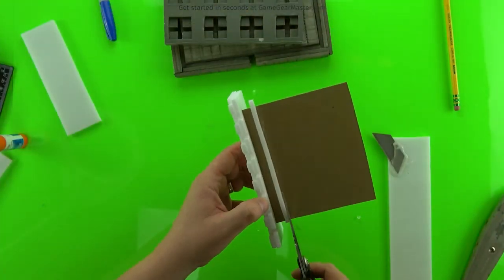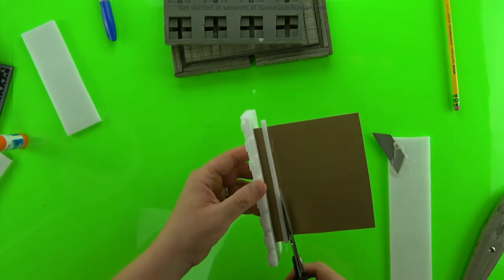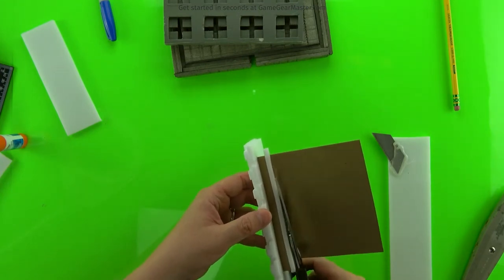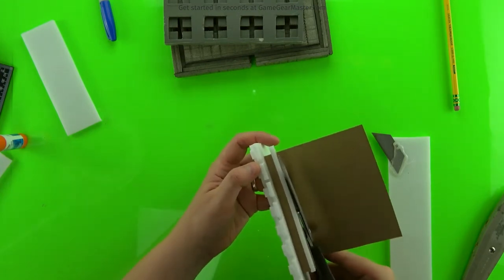And then we're going to cut off the pieces of the crenellation that we don't need. So the back of the cardboard and the two pieces of that foam board strip that are hanging off the edges.